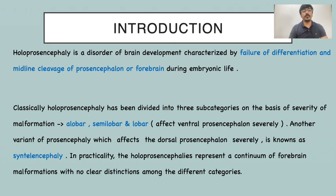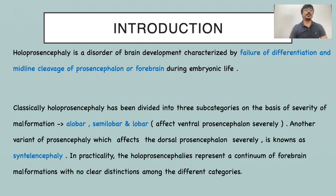Holoprosencephaly is a disorder of brain development characterized by failure of differentiation and midline cleavage of the prosencephalon, or forebrain, during embryonic life. Classically, holoprosencephaly has been divided into three subcategories on the basis of severity of malformation: alobar, semilobar, and lobar. Another variant affecting the dorsal prosencephalon severely is known as syntelencephaly. In practicality, the holoprosencephalies represent a continuum of forebrain malformation with no clear distinction among the different categories.